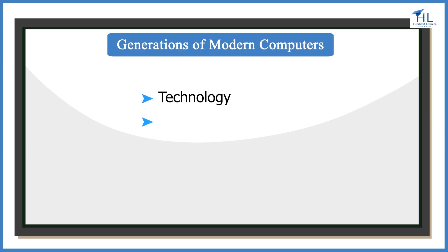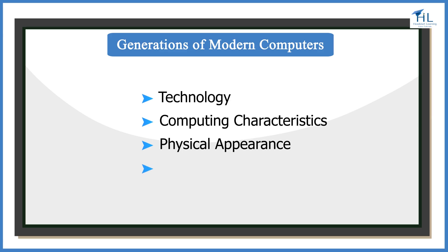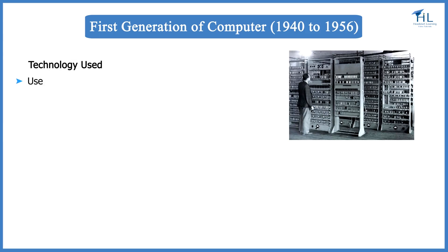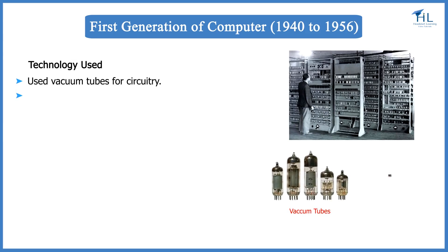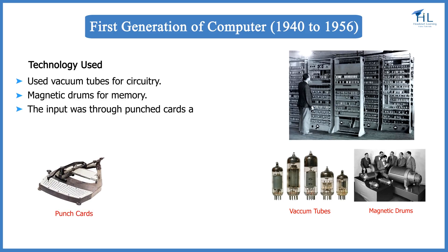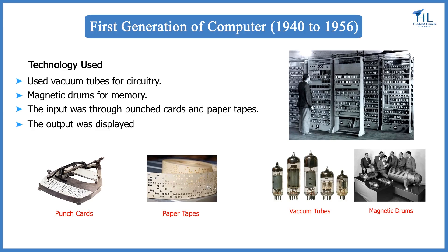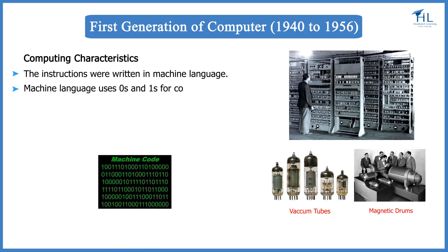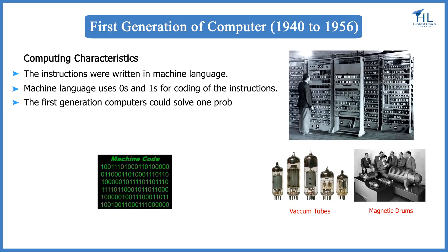We will discuss the generations of computers in terms of the technology used, computing characteristics, physical appearance, and their applications. The first generation of computers, from 1940 to 1956, used vacuum tubes for circuitry and magnetic drums for memory. The input to the computer was through punched cards and paper tapes, and the output was displayed as printouts. Instructions were written in machine language, which uses zeros and ones. The first generation computers could solve one problem at a time, and the computation time was in milliseconds.